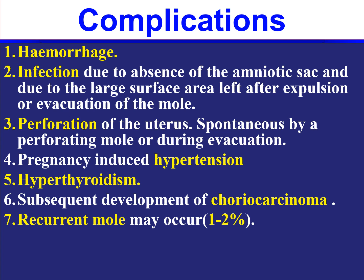Complications of vesicular mole include hemorrhage and risk of infection — due to absence of amniotic fluid and the large surface area left in the uterus after evacuation. There is a chance of perforation of the uterus, which can occur spontaneously or during evacuation. Additional complications include pregnancy-induced hypertension, hyperthyroidism, and malignant transformation — especially complete mole may become a choriocarcinoma. There is also a 1–2% chance of recurrence in subsequent pregnancies.